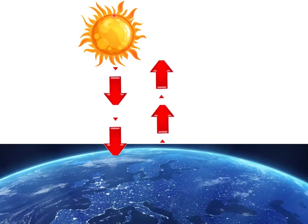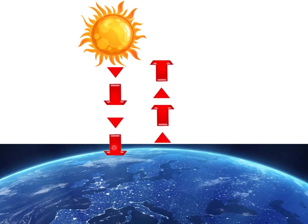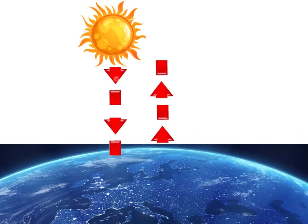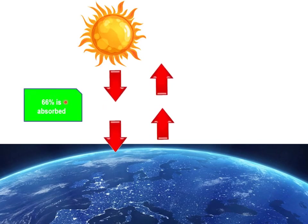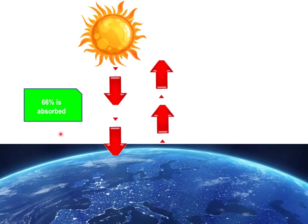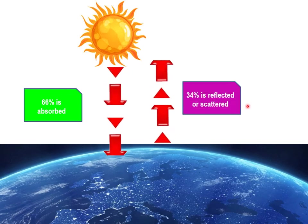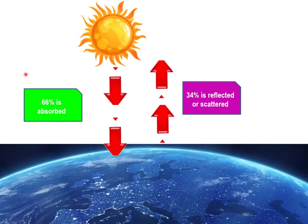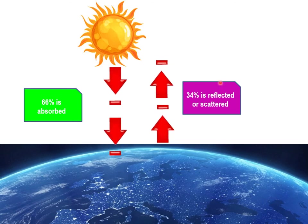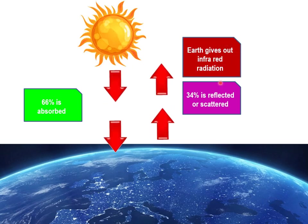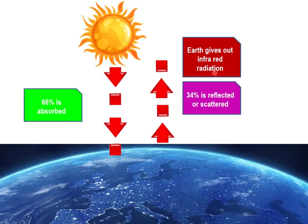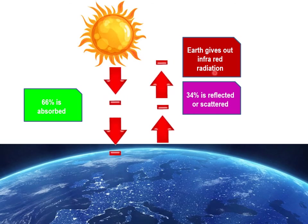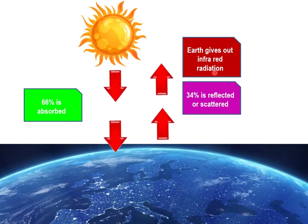The greenhouse effect works as follows: the sun emits solar radiation which falls into the earth's atmosphere. About 66% of radiation is absorbed by the earth. The remaining amount of radiation is reflected. The earth absorbs radiation in the visible region and emits infrared (IR) radiation.